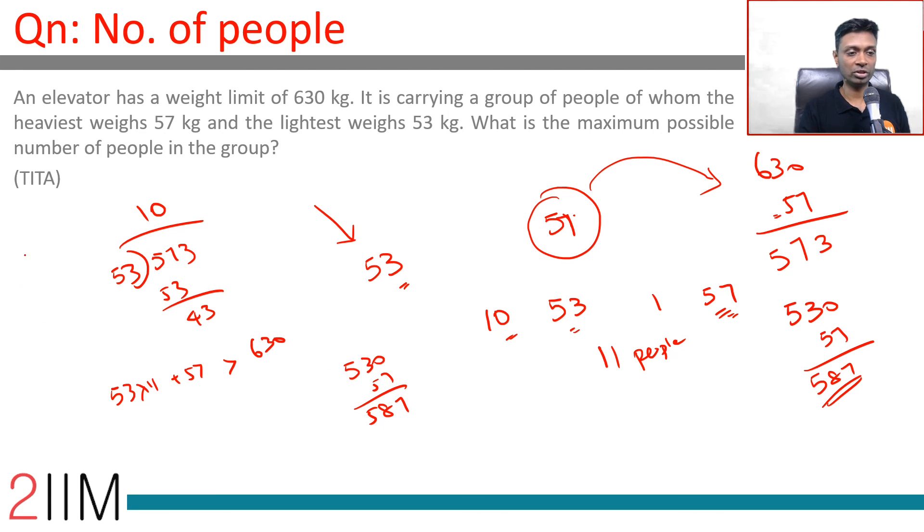This is 11. We cannot have 12 people in this group. 12 people in this range is not possible.